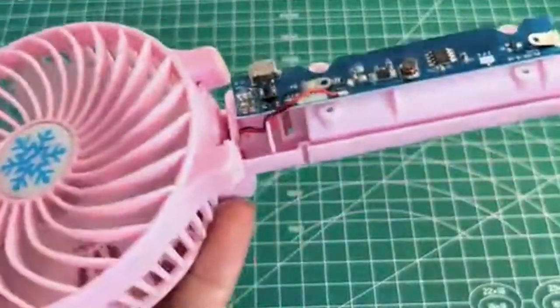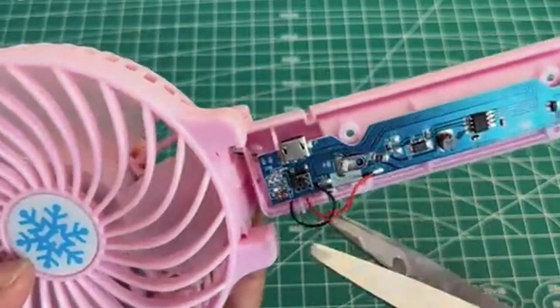After removing the cover, cut both positive and negative power cables in the middle.